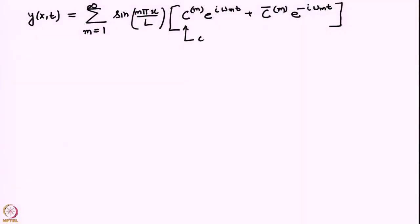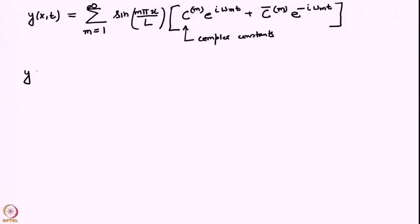The question is how do we determine these c_m's? They are in general complex constants, and like in the finite degree of freedom case, the c_m's have to be determined from initial conditions. Here we specify the initial displacement of the string at every x — that is, what is the value of y(x, 0). This is going to be a function of x, which we call f of x.